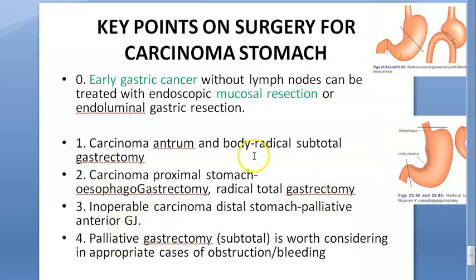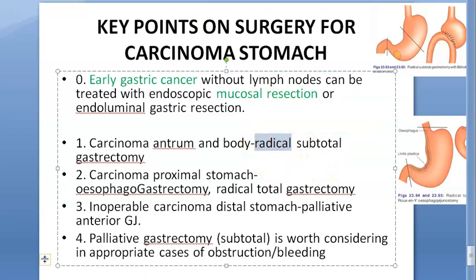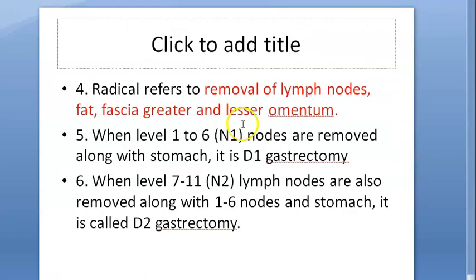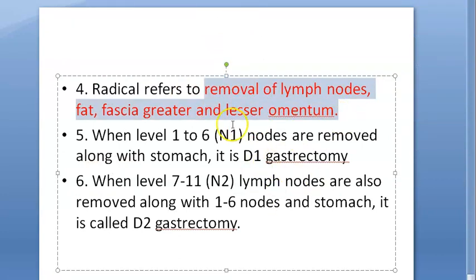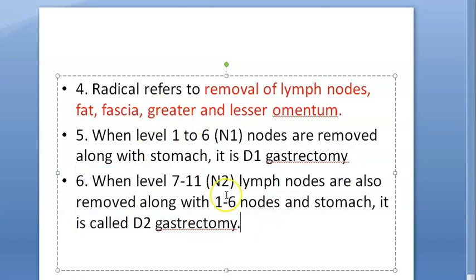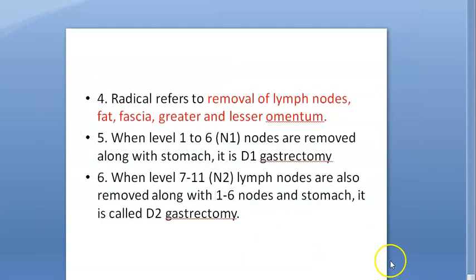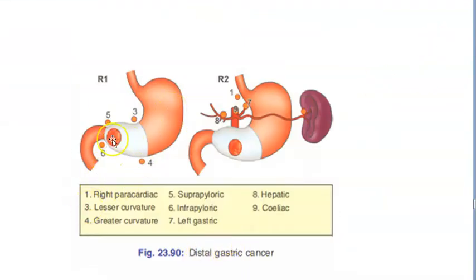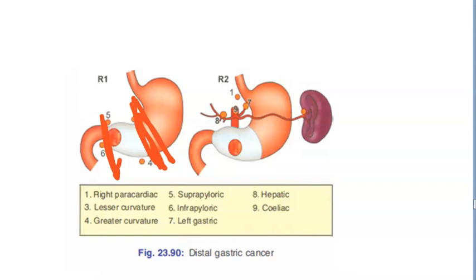Regarding these surgeries, 'radical' means removal of lymph nodes, fat, fascia, greater and lesser omentum — everything around it. There are multiple lymph node levels that can be removed. For distal cancer, the treatment is radical subtotal gastrectomy, covering nodes such as perigastric, lesser curvature, greater curvature, suprapyloric, infrapyloric, left gastric, hepatic, and celiac nodes.